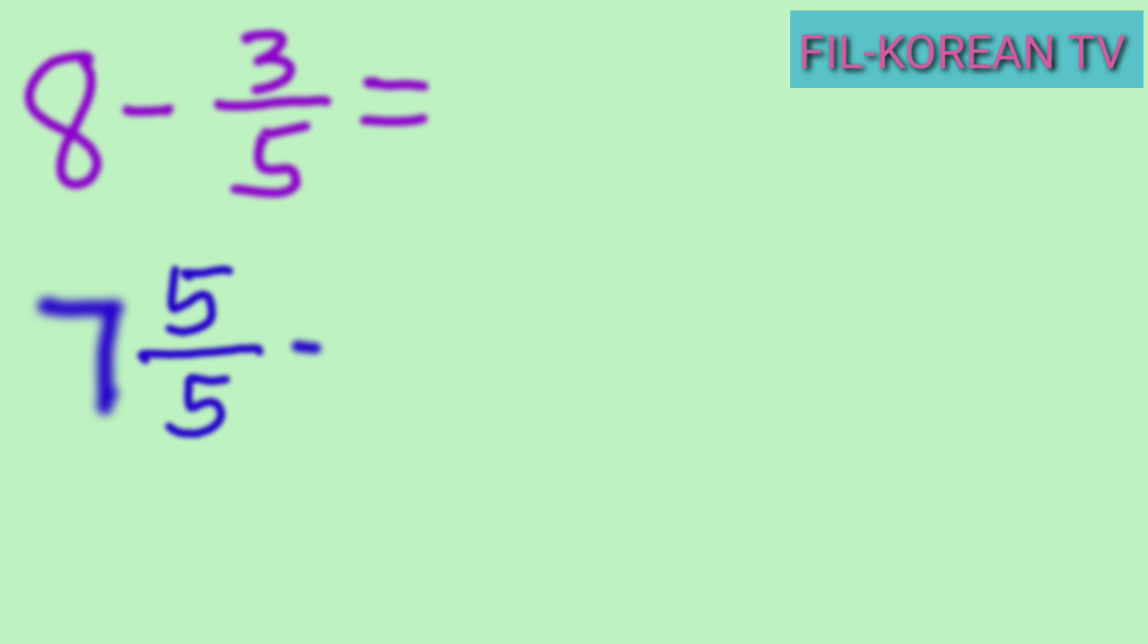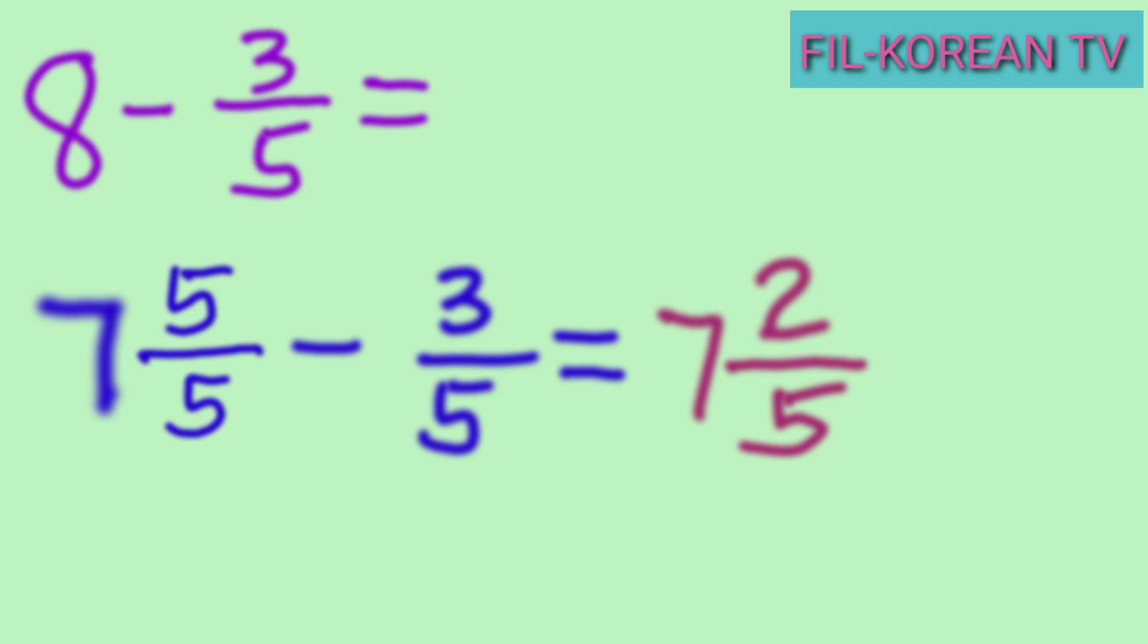Now, write the subtrahend 3 fifths. Since the whole number is a mixed number now, we can subtract. Subtract the numerators: 5 minus 3 equals 2. Then write the whole number 7 and copy the common denominator 5. The answer is 7 and 2 fifths.